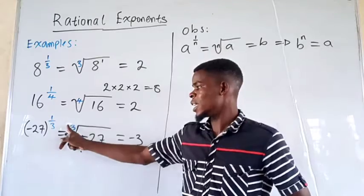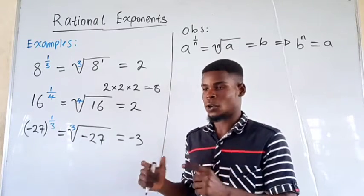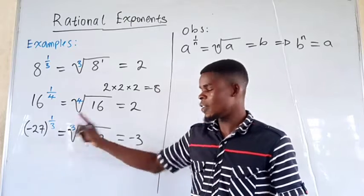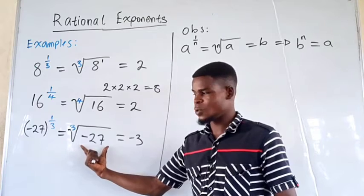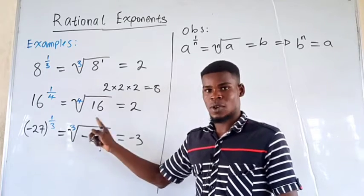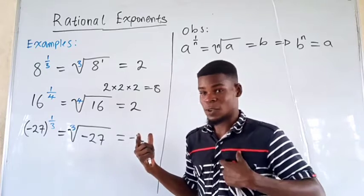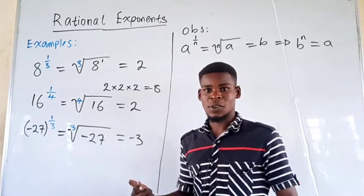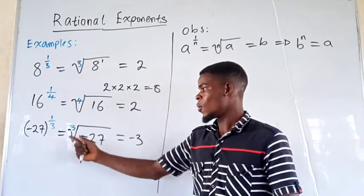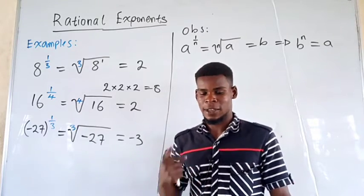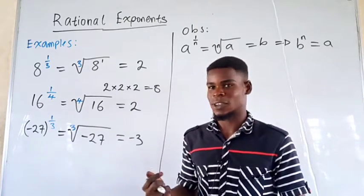But whenever we have an even index — for example, 2, 4, 6, 8, and so on — all even numbers, if you have an even index here, you can't take that root of a negative number. For example, the square root of a negative number — you can't do that in the set of real numbers. The fourth root of a negative number does not exist in the set of real numbers. This only works for odd indexes, like fifth root, seventh root, even the third root, the cube root, and so on.